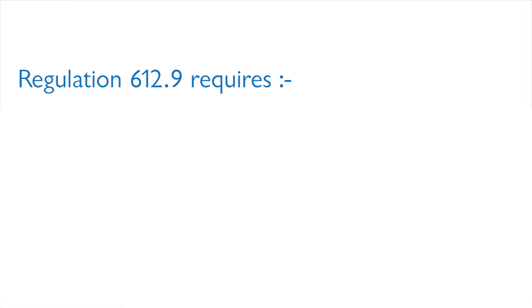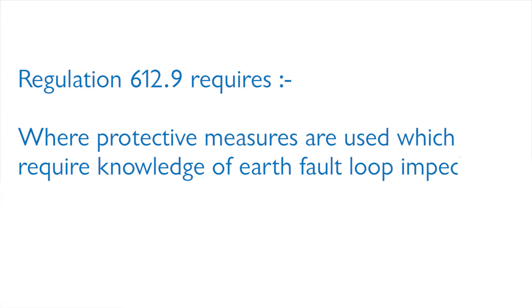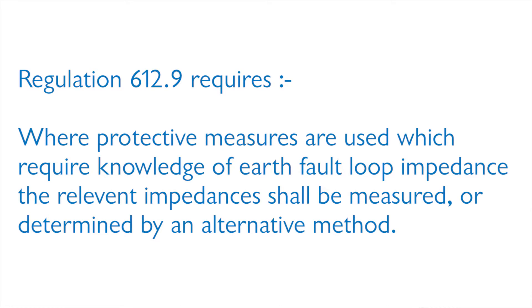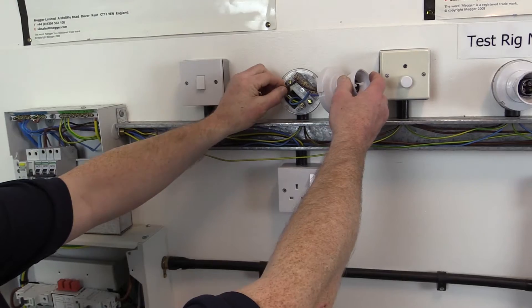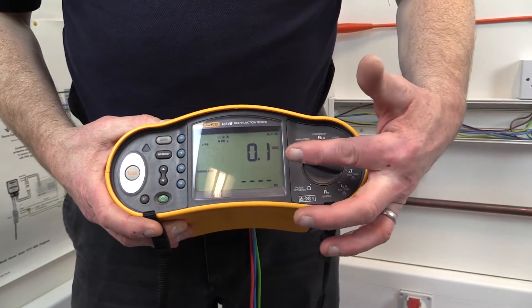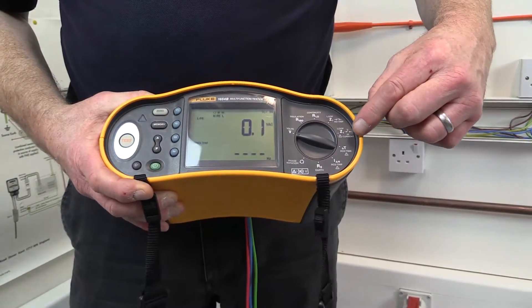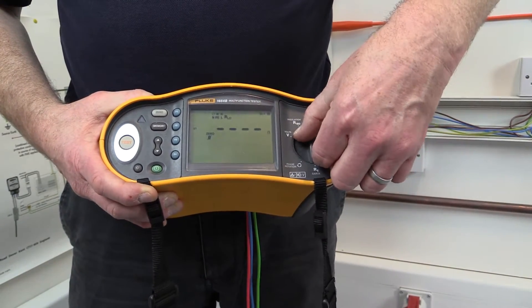Regulation 612.9 requires that, where protective measures are used which require knowledge of earth fault loop impedance, the relevant impedances shall be measured or determined by an alternative method. The earth fault loop impedance ZS will require to be determined at the furthest point of each circuit, and this can be done by using an earth fault loop impedance test instrument or a multi-function test instrument set to the appropriate earth fault loop impedance setting.